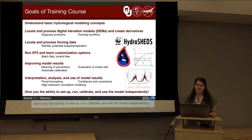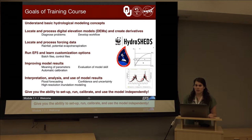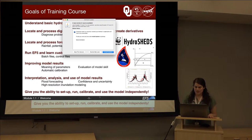We have many goals for this advanced training course. We're going to understand basic hydrologic modeling concepts, locate and process digital elevation models (DEMs) and create derivatives, and locate and process forcing data. We're going to run EF5 and learn customization options, improve model results through calibration and evaluation of model skill, and interpret, analyze, and use model results to forecast future conditions. Finally, we'll give you the ability to set up, run, calibrate, and use this model independently.